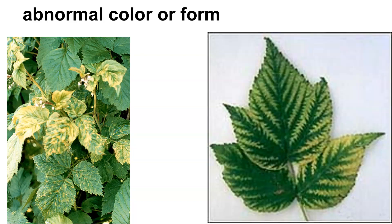We can get abnormal color forms on these due to biotrophic type pathogens. The one on the left hand side looks like a mosaic type. The one on the right hand side looks like a discoloration — this could be due to a fungus, or it might be due to a mineral deficiency. There are a lot of different things that could actually give you this type of discoloration.